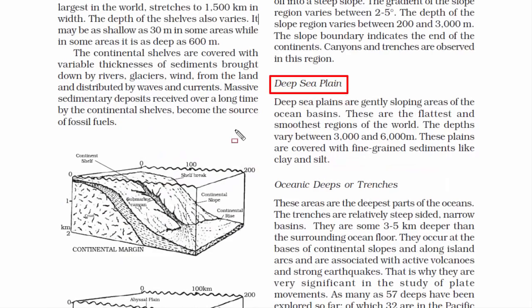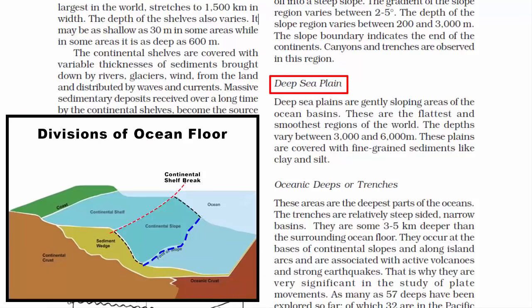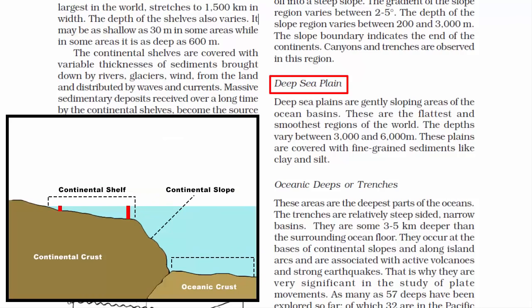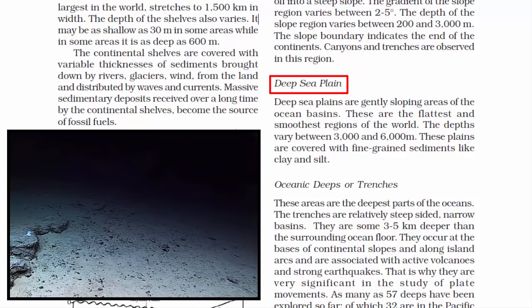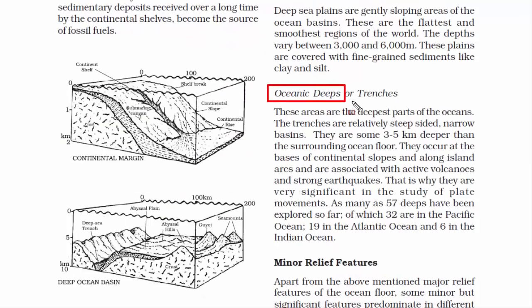The third division is the deep sea plain. Where the continental slope ends, a horizontal plane begins — it is an underwater plain on the deep ocean floor. Deep sea plains are generally found between the foot of a continental slope and an oceanic ridge or oceanic trench. They are the flattest and smoothest regions of the world, with depth varying between 3,000 to 6,000 meters, covered with fine-grain sediments like clay and silt.